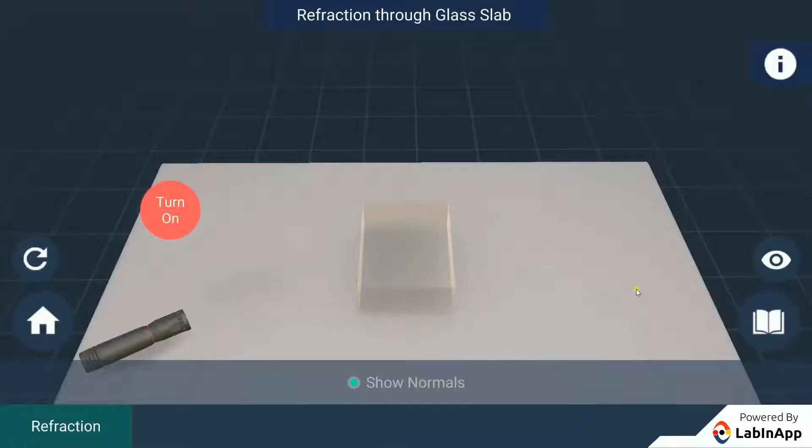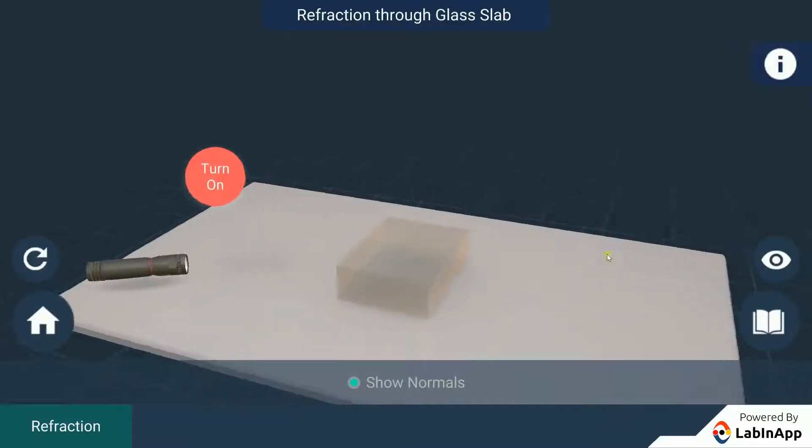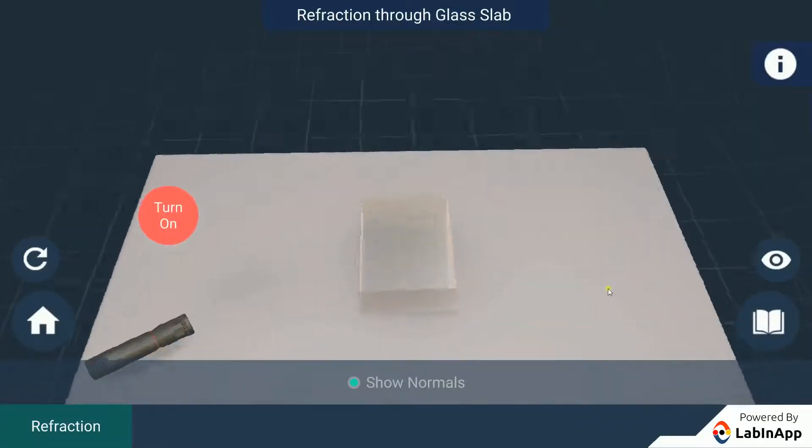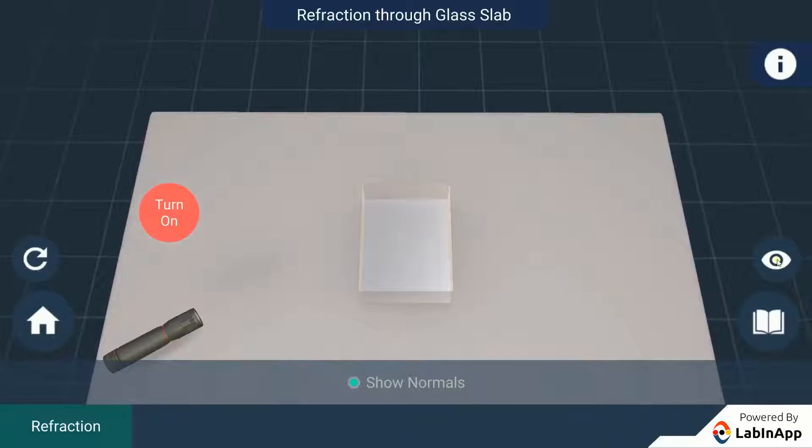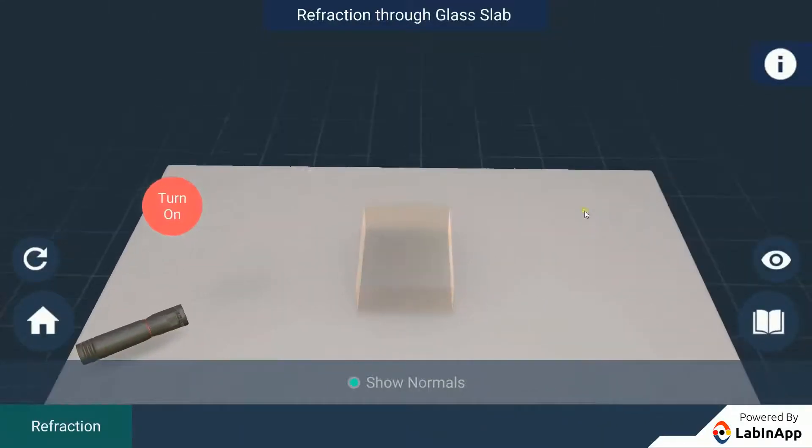Let's understand the phenomenon of refraction of light through a glass slab. We have taken a torch and a glass slab. Turn on the torch. We can see that the light ray passes through the glass slab.